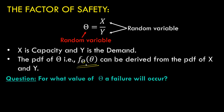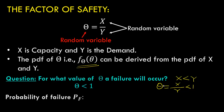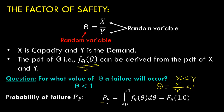At this point we have one question: for what values of theta will failure occur? For a system to fail, the capacity X should be less than the demand. In other words, the ratio X divided by Y should be less than 1 — that is basically the random variable theta. If theta is less than 1, the system is going to fail. So failure occurs when theta is less than 1, and we can calculate the probability of failure by integrating from 0 to 1.